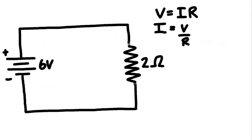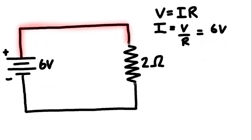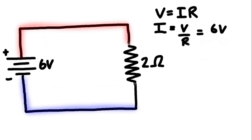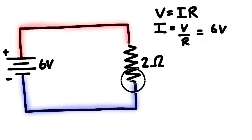What we normally do is add resistors to the circuit to limit the amount of current flowing out of the voltage source. With a single resistor, the voltage drop across it is 6 volts, because the entire top wire is connected to the positive terminal. Everything on the red node is 6 volts higher than everything on the blue node. The resistance here is 2 ohms, so by Ohm's law the current is 3 amps.